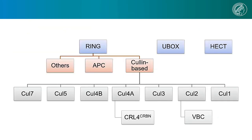Because of the multi-subunit E3 ligases, we and others have especially been interested in the two cullin-based E3 ligases: CRL4 Cereblon, and the VBC — the VHL, Elongin B, Elongin C complex. This is because both of them are ubiquitously expressed throughout most tissues in humans.